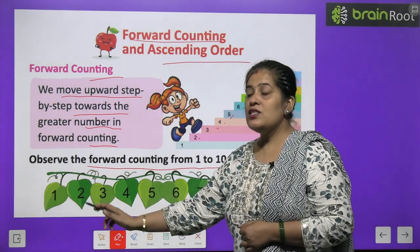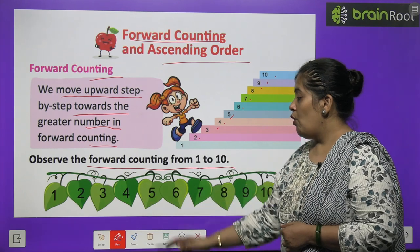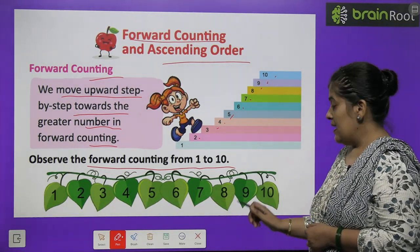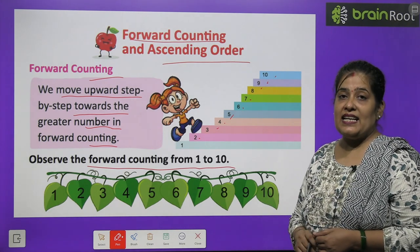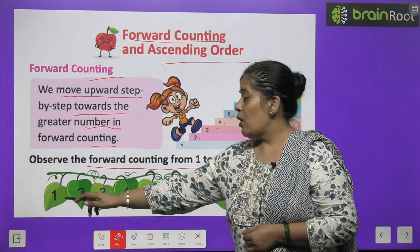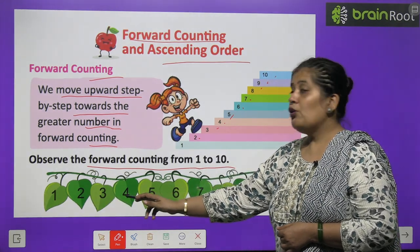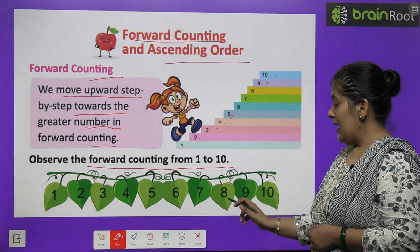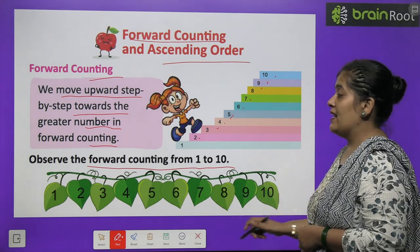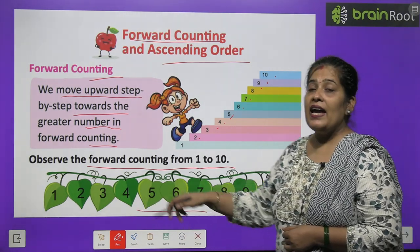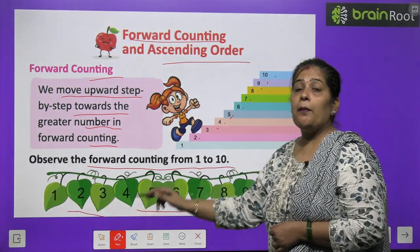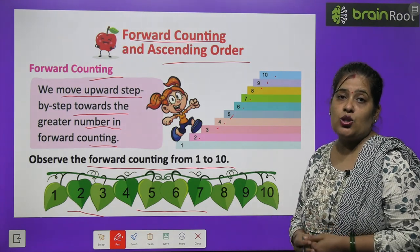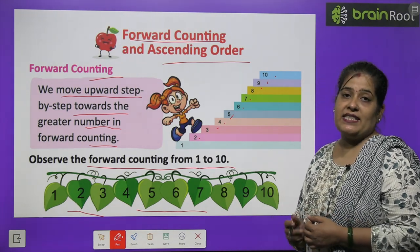1, 2, 3, 4, 5, 6, 7, 8, 9 and 10. Again we will learn: 1, 2, 3, 4, 5, 6, 7, 8, 9 and 10. Is counting mein kya hai? Step by step chhoate se bade number ki taraf haam ja rahi hai. Islee isko forward counting kehte hain.